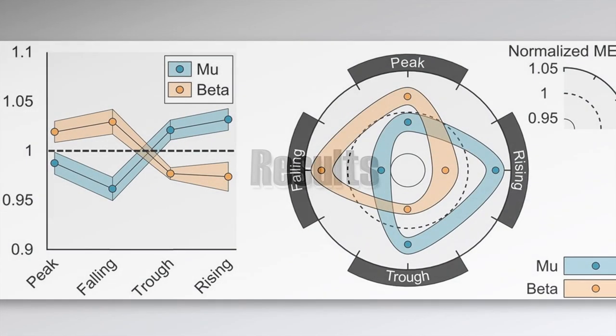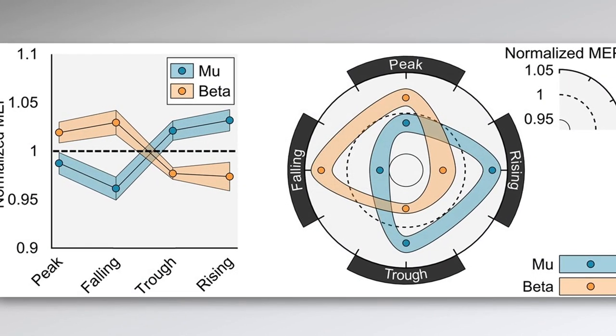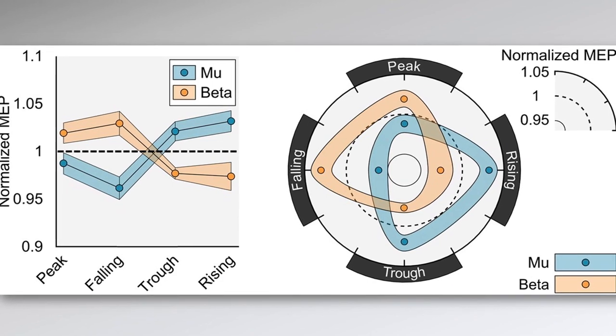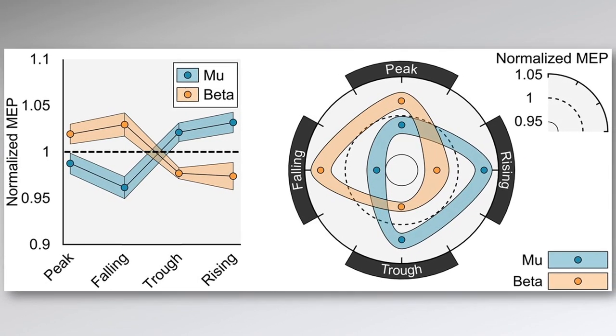Our data show that there is a significant phase relationship for both mu and beta oscillations in the motor cortex. Strikingly, this phase relationship was opposite for both rhythms.